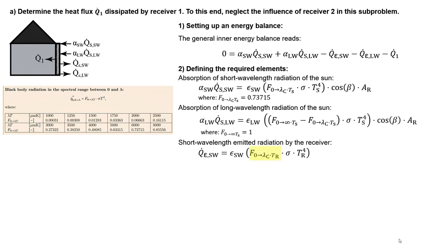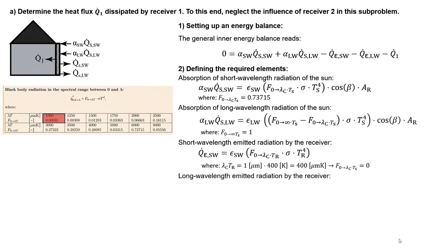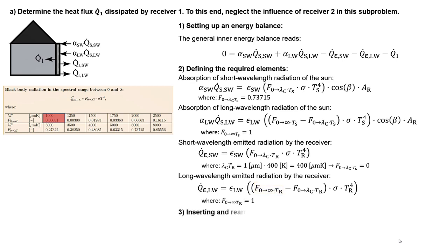To determine this factor F, we find the product of the cutoff wavelength and the temperature of the receiver, which yields a value of 400. Reading this table, we find that for a value of 1000 factor F is approximately zero, so for a value of 400 factor F will also be about zero. Then we define the long wavelength emitted radiation by the receiver in a similar manner, where factor F covers from the cutoff wavelength to infinity, yielding 1 minus factor F from 0 to the cutoff wavelength. Factor F from 0 to infinity equals 1 as it covers the entire spectrum. Substituting all definitions into the energy balance, we find the heat flux dissipated by receiver 1.